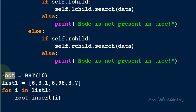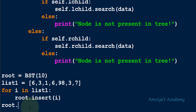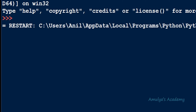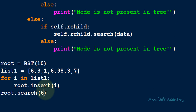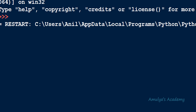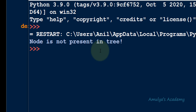Here we have a root BST object with value 10, then a list of values. We use a for loop calling the insert method, then after that we call search. When searching for 6 — which is present — we execute the program and get the message 'node is found'. When searching for 60 — which is not present — we get 'node is not present in the tree'.